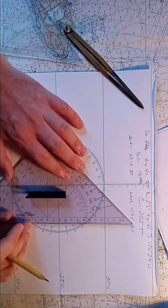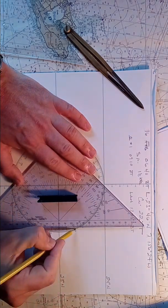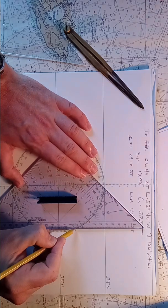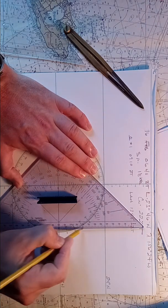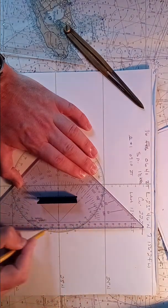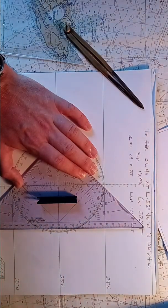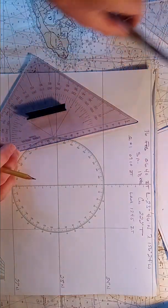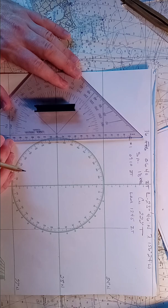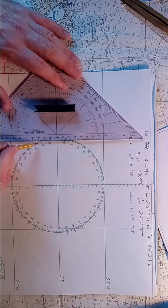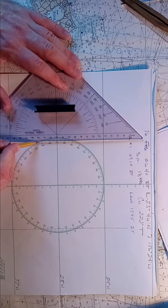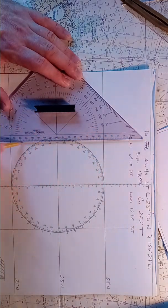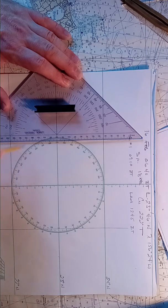Take our triangle. Put the pencil on the 23 mark. Line it up as straight as you can make it. And then plot your line, holding the pencil in the same angle through both marks. Same thing on the western side. Line it up, put your pencil on a mark, hold that same angle. Try to make your pencil as sharp as possible.